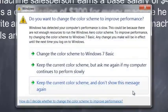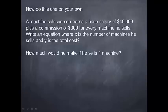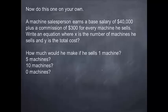Now this one I want you to do on your own and bring it in tomorrow. A machine salesperson earns a base salary of $40,000 plus a commission of $300 for every machine he sells. Write an equation where x is the number of machines he sells and y is the total cost. How much would he make if he sells one machine? How about five machines? Ten machines? Zero machines? Make sure you work this one out and bring it into class. Don't forget to show your work for all of these problems. Have a great rest of your day or night.